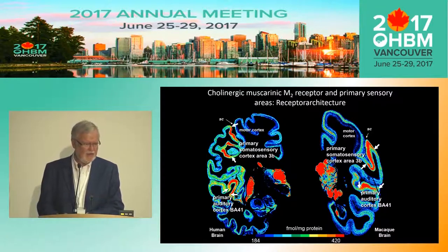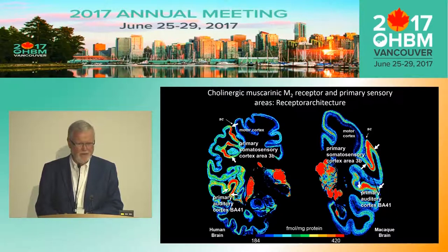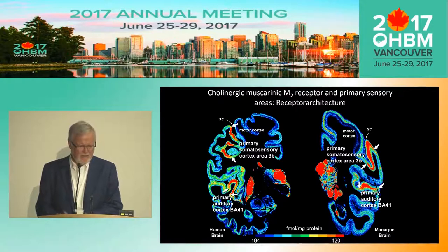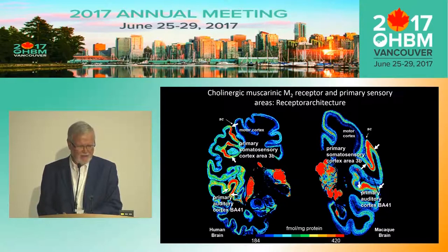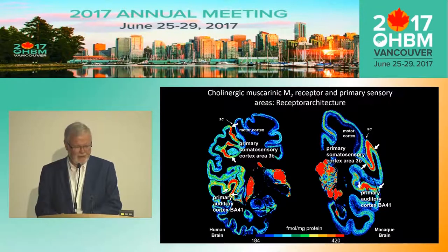The question is whether this is an evolutionarily old and conservative feature of the cortex. And yes, it is. On the right side we have a macaque brain, blown up to approximately human size for easy comparison. You see area 3B of the primary somatosensory cortex and the primary auditory cortex with a small Heschl gyrus — the same pattern as in humans.